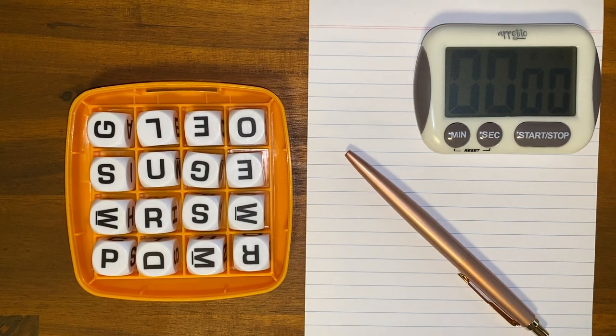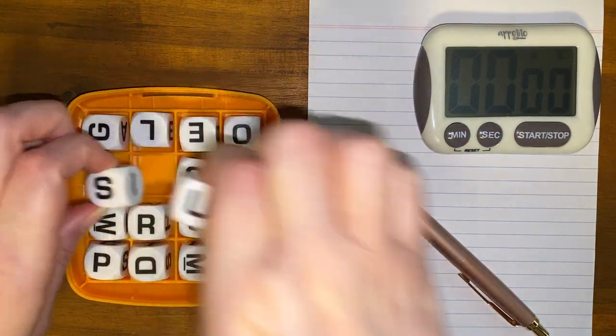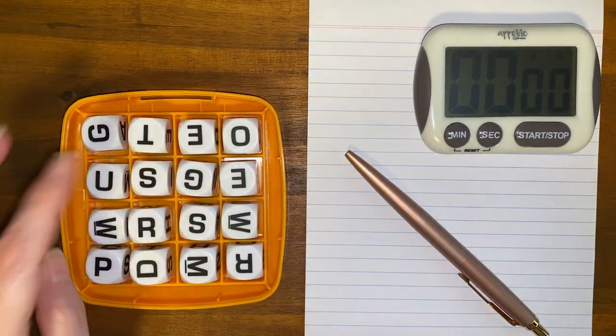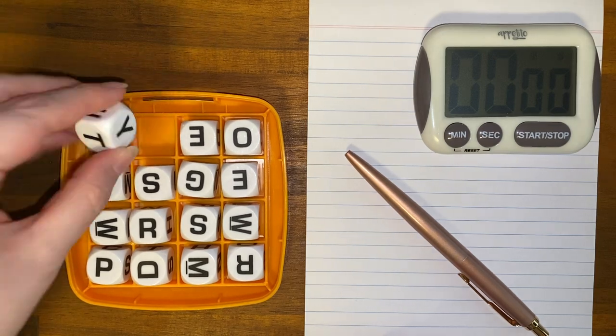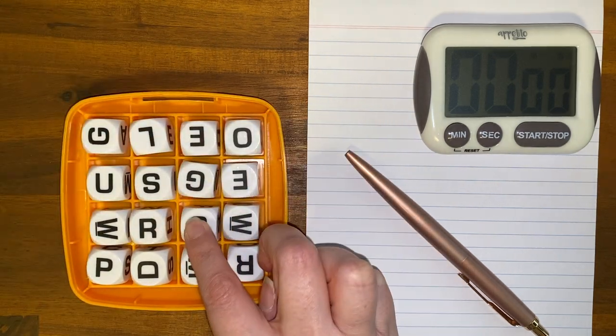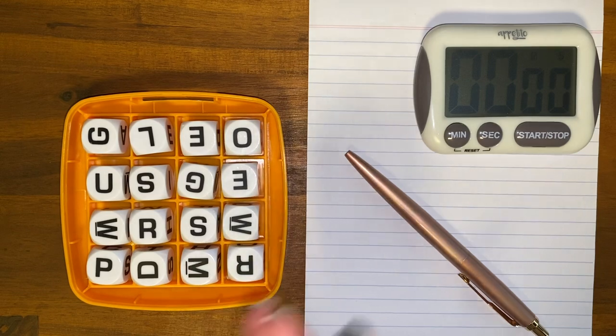And you can only count a word once even if it's found in the grid more than once. So for example, if this S was in fact here we could make legs once and we could make it twice, but it would only count one time.